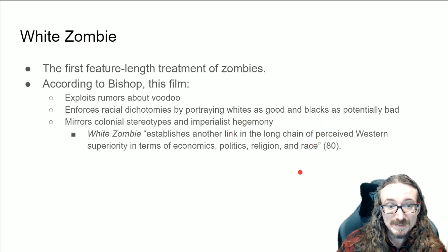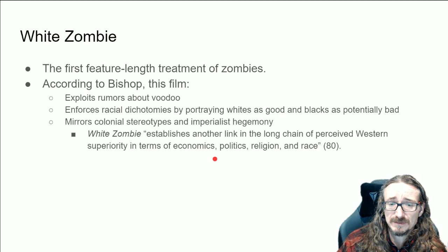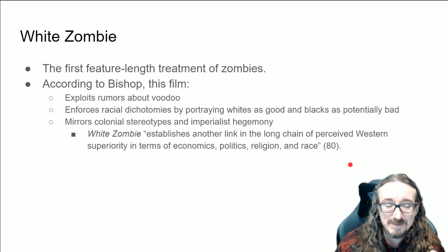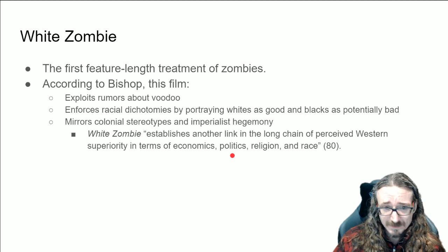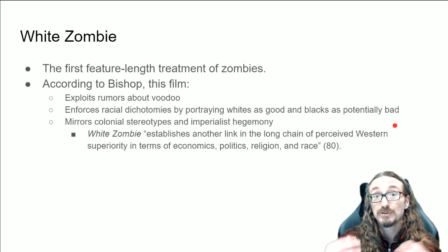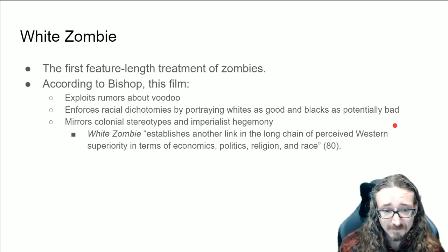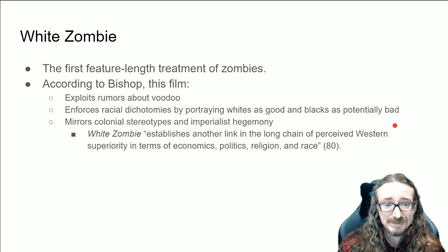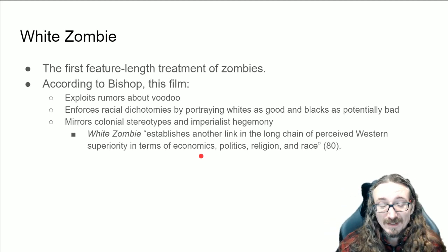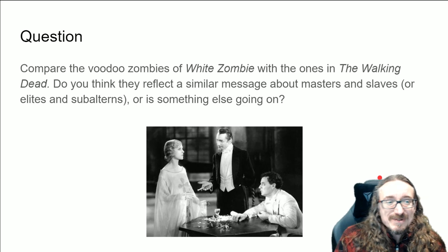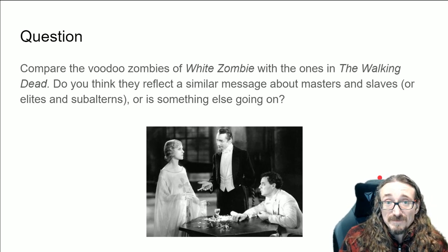This establishes another link in the long chain of perceived western superiority in terms of economics, politics, religion, and race. As you watch the film, pay attention to who the characters are — the models and anti-models — who's portrayed as positive and good, who's portrayed as bad, weak, or vulnerable, and how that is tied to race, religion, economics: who are the rich characters, who are the poor characters.